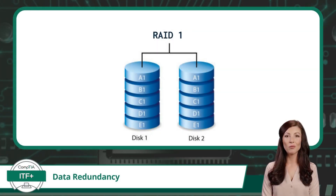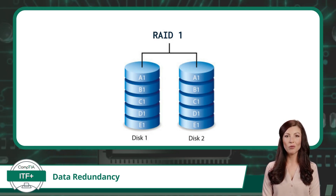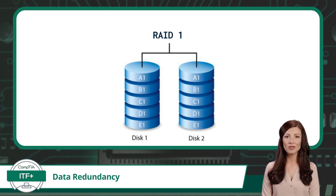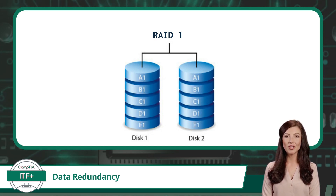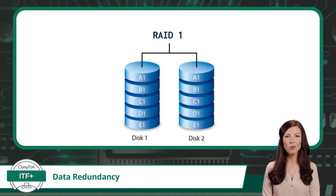Our next RAID level, RAID 1, operates like a mirror. Data is duplicated or mirrored across two disks, ensuring that if one fails, the other retains all the data. While this type of RAID configuration offers redundancy, it doesn't enhance performance in the way RAID 0 does.